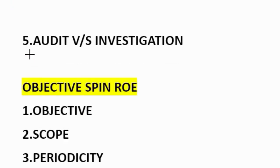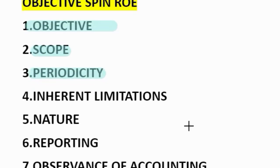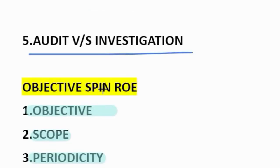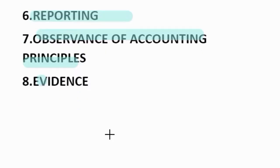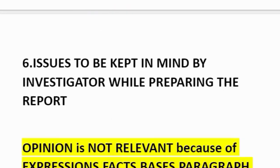Fifth question: audit process investigation. How to remember this? Objective you SPIN ROE. Objective — we know it. Next SPIN: S for scope, P for periodicity, I for inherent limitations, N for nature. SPIN is completed. Now ROE: R for reporting, O for observance of accounting principles, E for evidence.